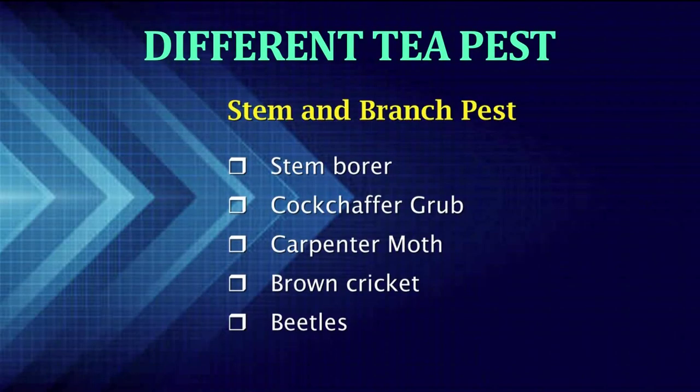Now, let's have a look at different stem and branch pests of tea plantations. Among the stem and branch pests of tea, the first one is the stem borer. The larva or borer bores into the tea stem, mostly of one or two year old tea plants. Then, the grub. This is a common pest basically in India and Bangladesh. The grub attacks the roots of young plants below three years of age.